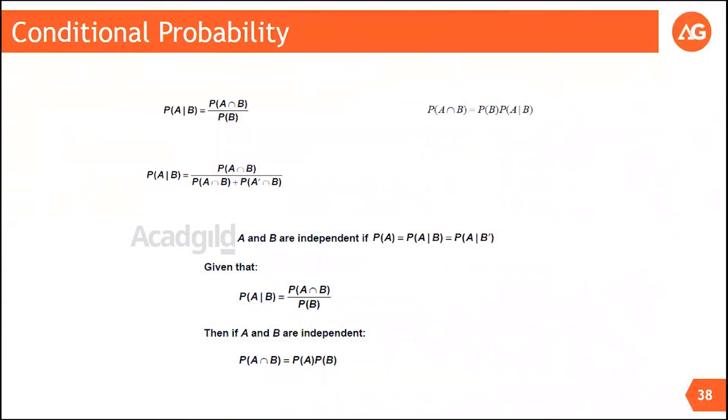Given that an event has occurred, what is the probability that another event would occur? Given that Trump has been elected, what is the probability that a certain economic policy would be implemented? Or given that Hillary has been elected, what is the probability that a certain economic policy is implemented? The answer to both questions would be different.